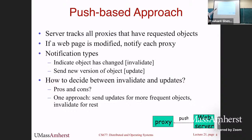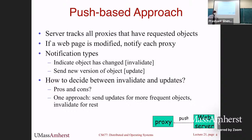The server tracks all proxies that have requested objects. If a web page is modified, it notifies each proxy. The notification can be of two types: invalidate — simply inform the proxy the web page has changed and have it discarded from the cache — or send the new version of the page, which automatically tells the proxy the page has changed and it can put the new page in its cache.